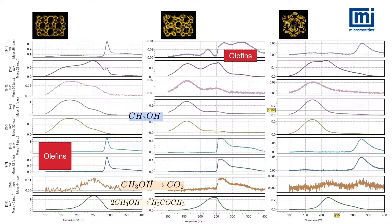Olefins and products driven by specific site interactions are shown in stack form. The parent methanol that is weakly adsorbed desorbs first, and above 250 degrees Celsius, olefins are formed. The Y-zeolite shows a dominance of acid sites as seen in the formation of dimethyl ether, with fewer basic sites as seen by the CO2 signals.